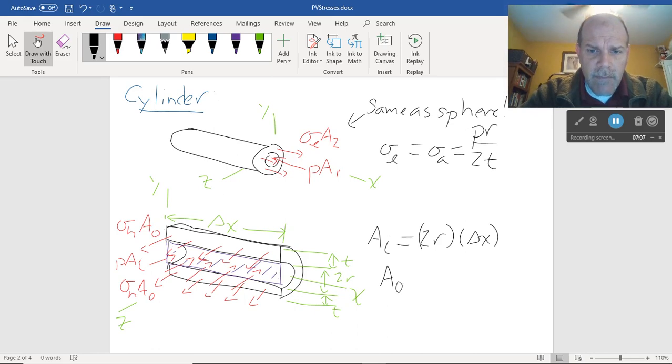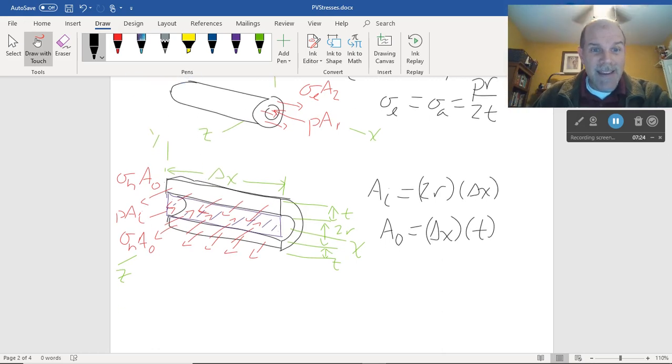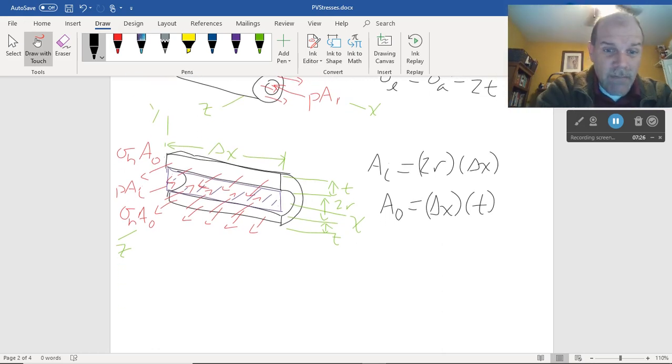That outside area, okay, is the area of a rectangle for the wall thickness. So that's going to have length delta x, just like the inner rectangle, thickness t. And I've got to remember I have one above and below. Why do I need to remember that? Because I'm going to sum forces in the z direction.